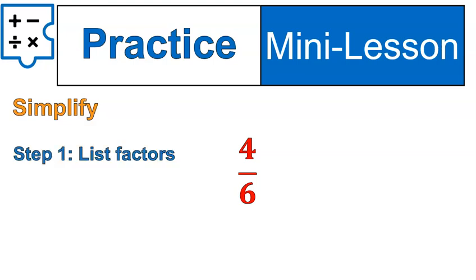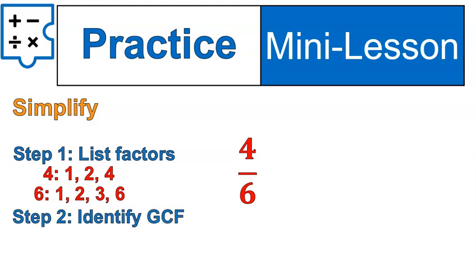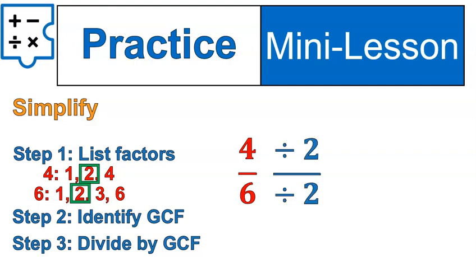Here are the steps. Step number one is to list the factors. I'm going to list the factors of 4 and 6. Then I'm going to identify my greatest common factor. In this case, it's 2. Then I divide both the 4 and 6 by the greatest common factor of 2. So I'm going to divide top and bottom of the fraction by 2. That gives me my final answer of 2 thirds. So 4 sixths is the same thing as 2 thirds. 2 thirds is just a more simple way of writing it.